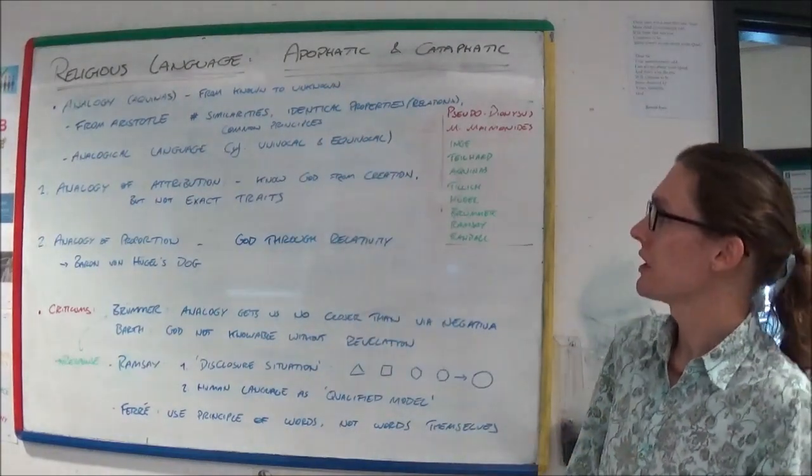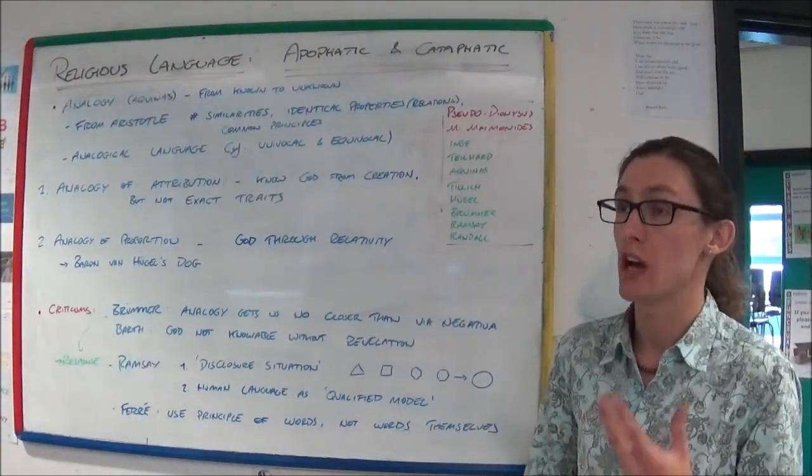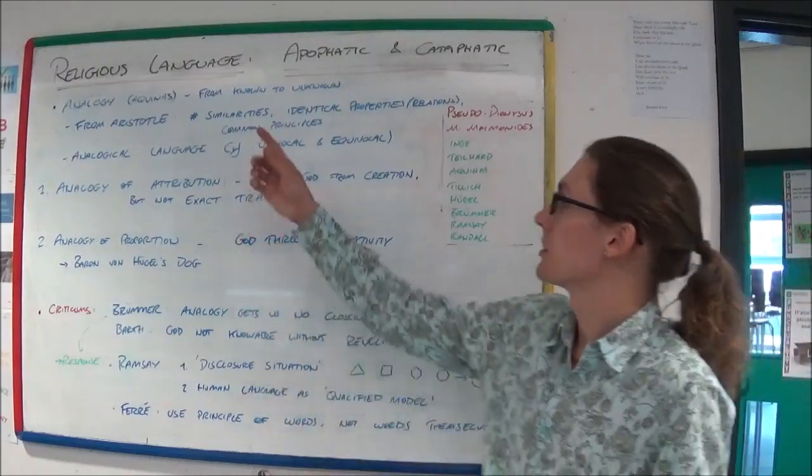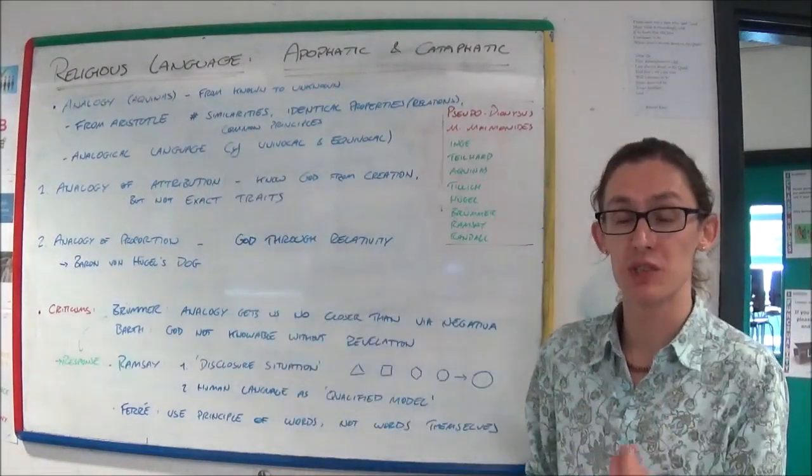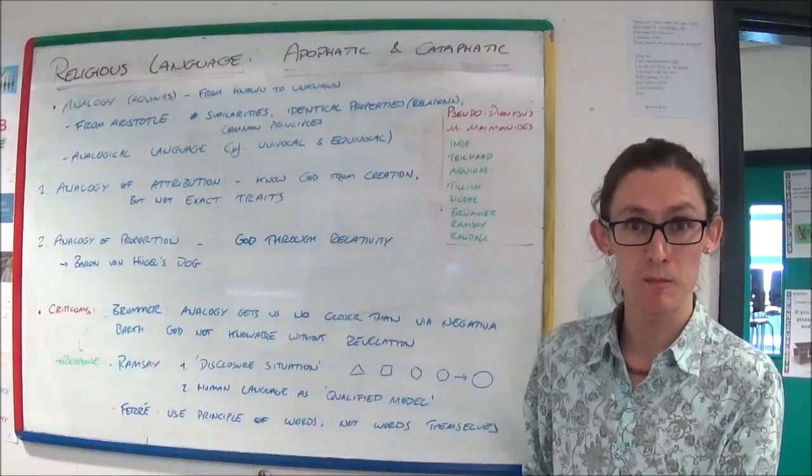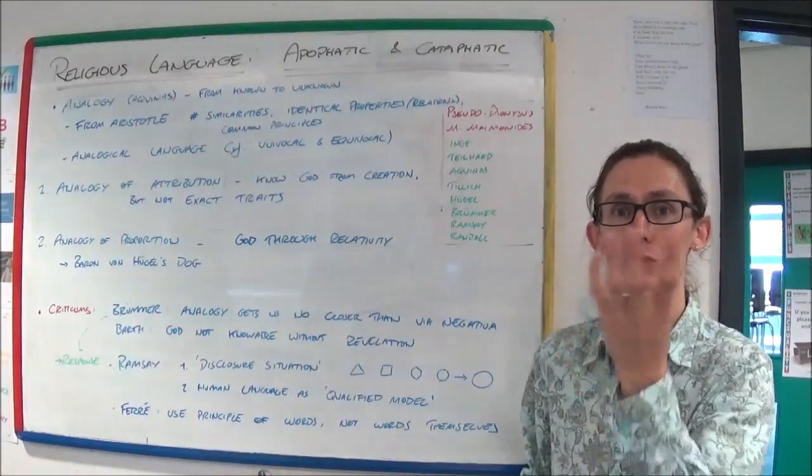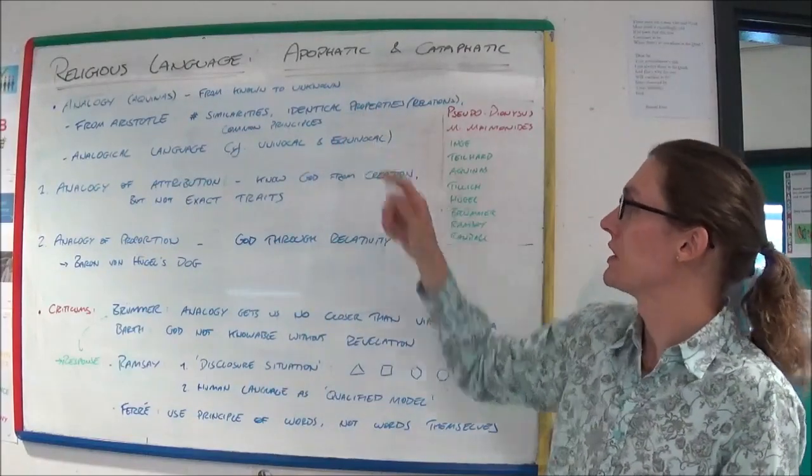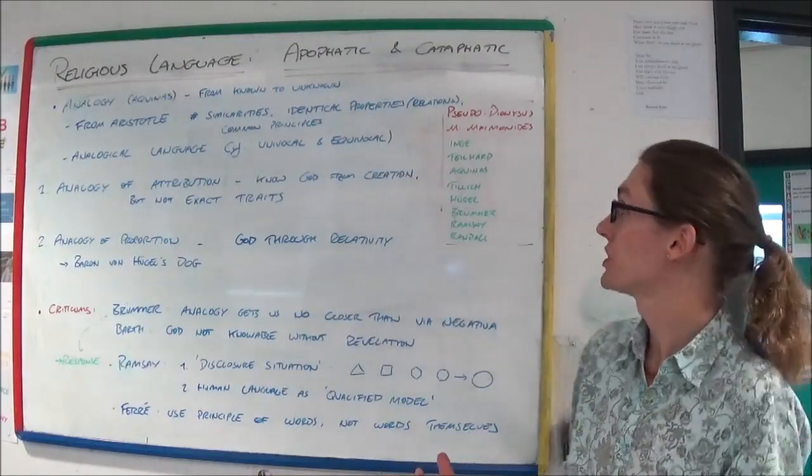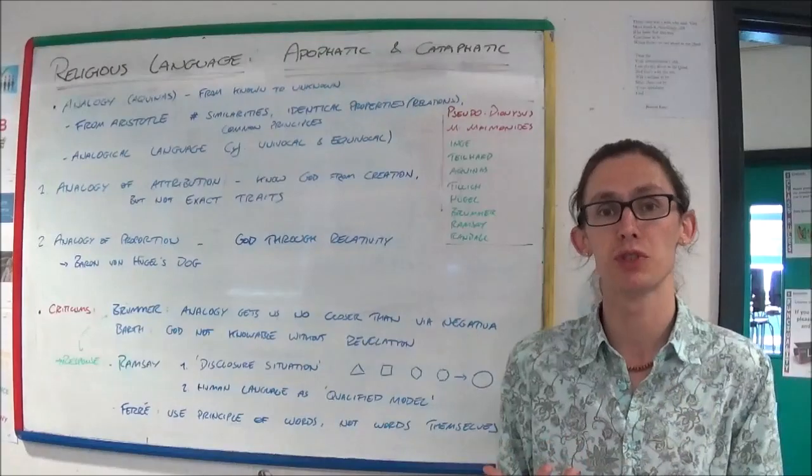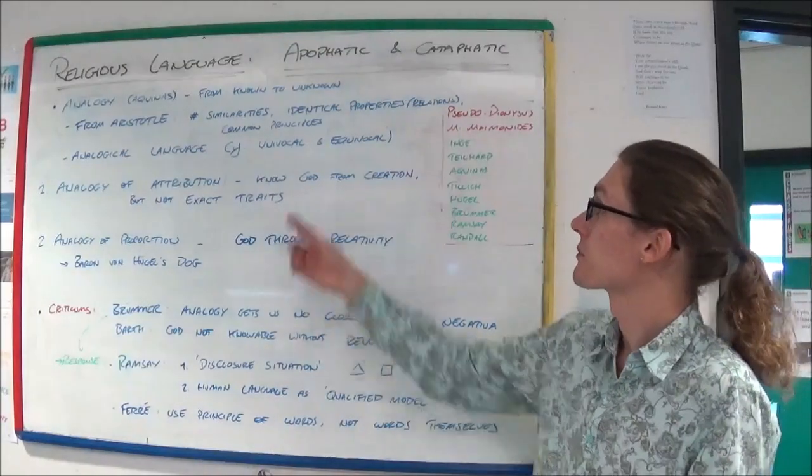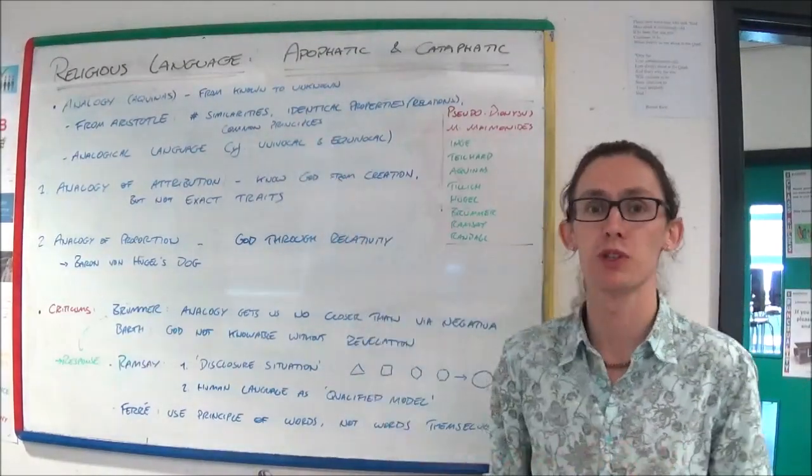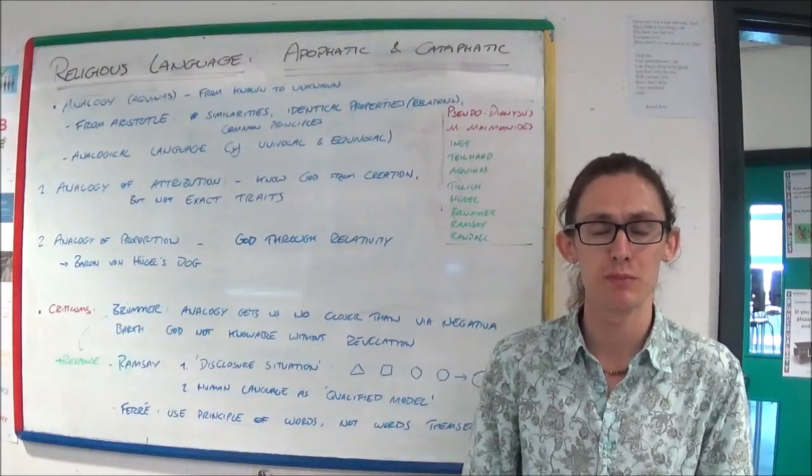Aristotle's criteria are that there need to be the right number of similarities, the more the better, within the analogy between the thing you know and the thing you don't know. There should be enough identical properties, or relationships within an analogy. And there should be common principles at work as well.